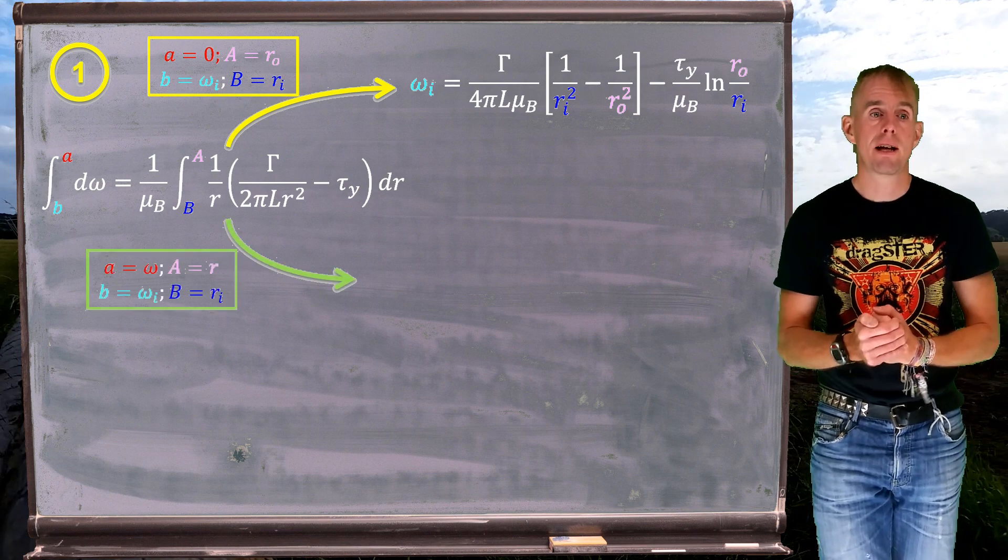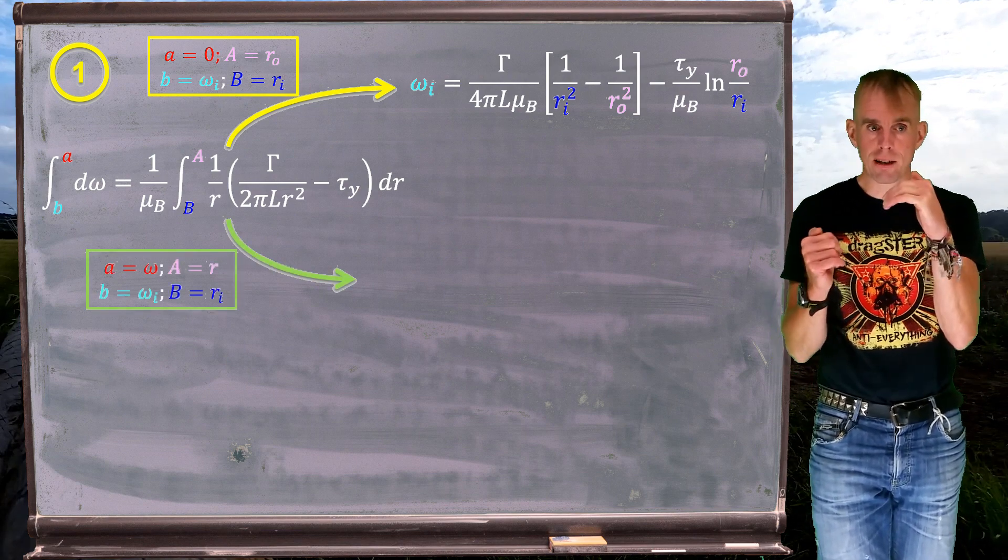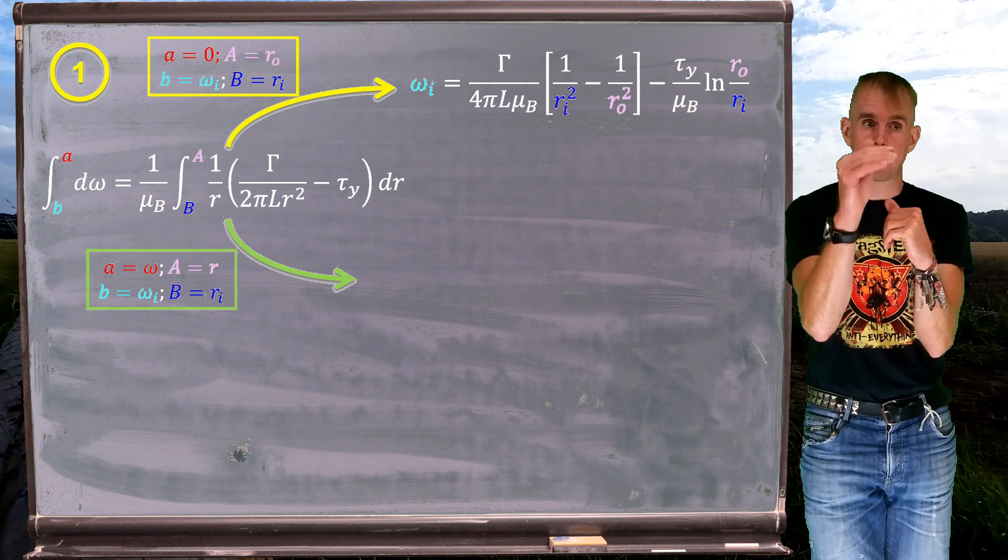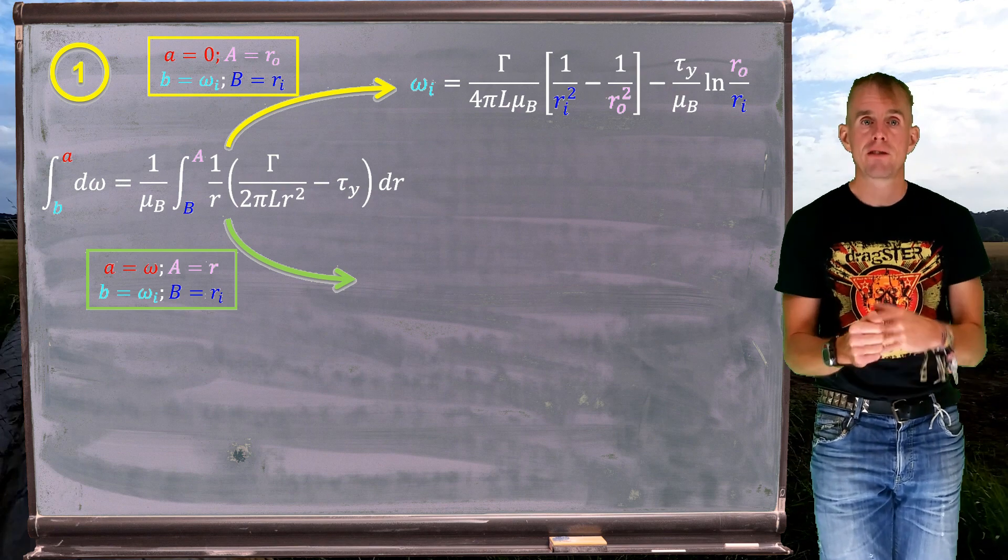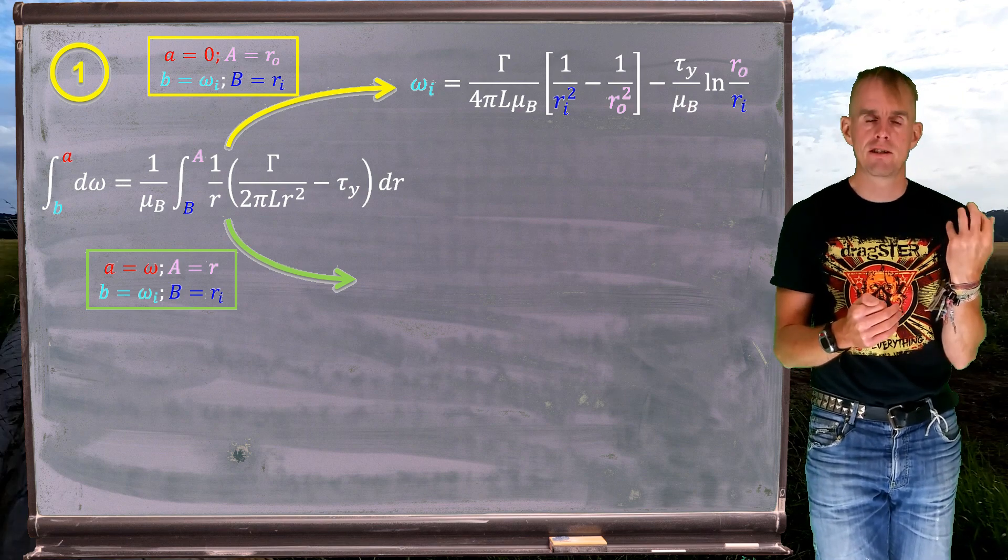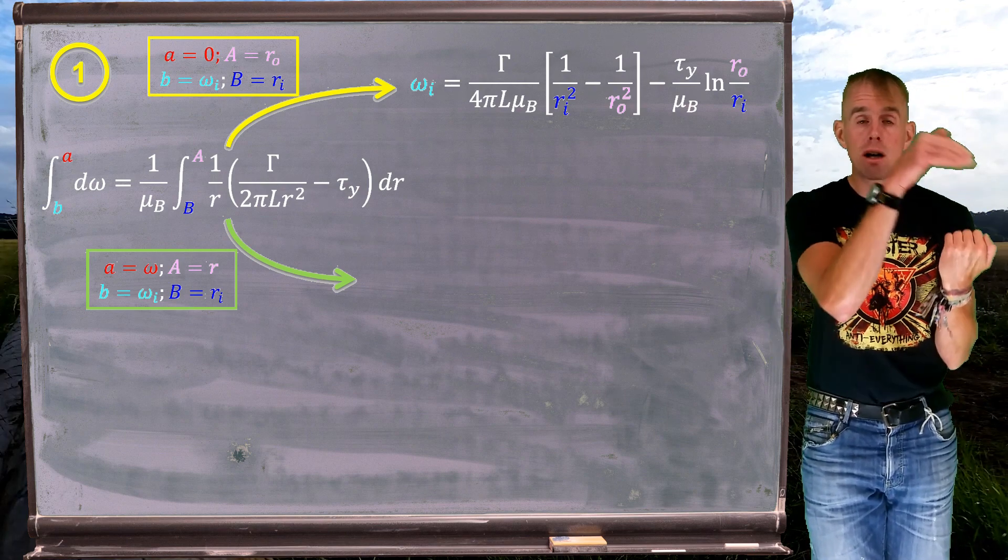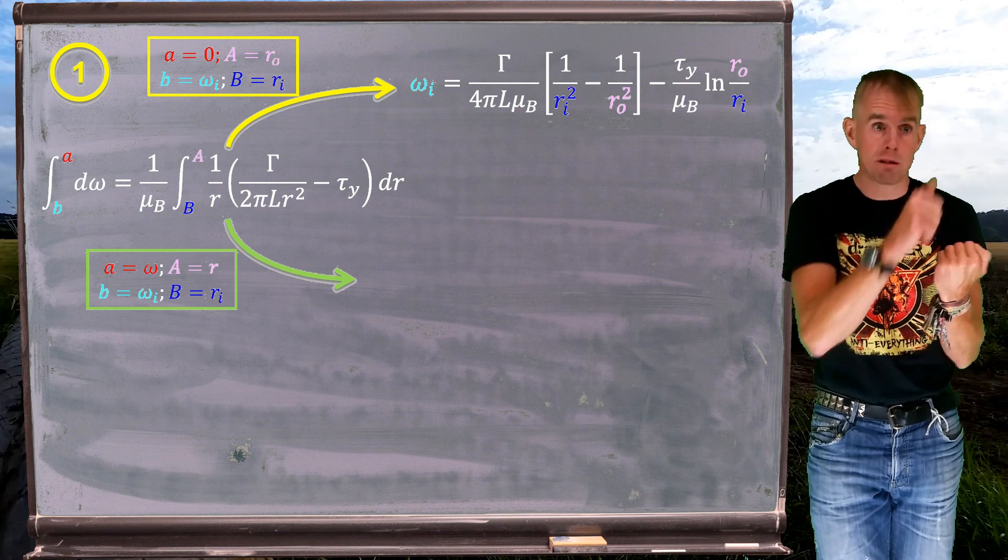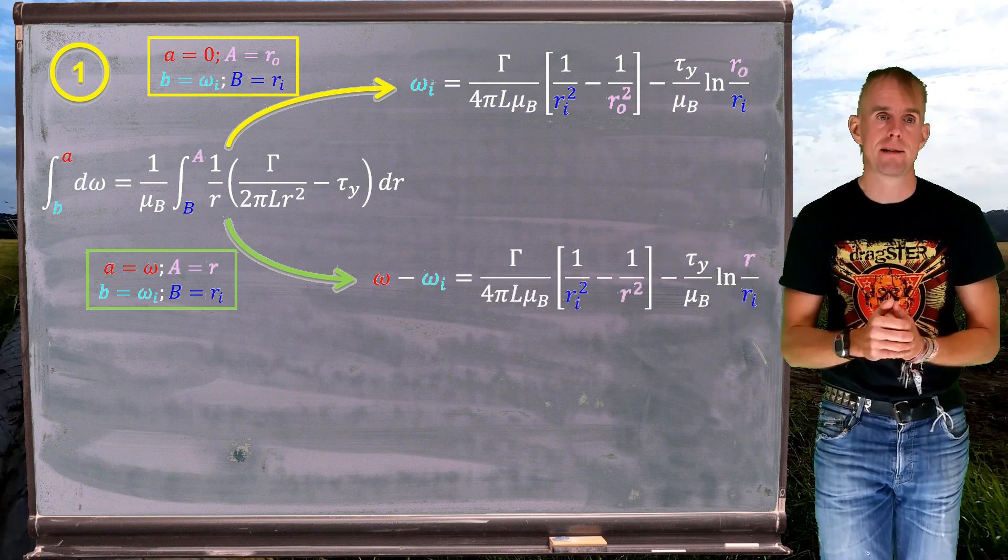Now I'm going to change my limits, and so I'm integrating from the inner cylinder to an arbitrary point in the flow, little r, which means, in angular velocity terms, I'm going from the angular velocity of the inner cylinder, omega i, through to an arbitrary value of omega somewhere in the flow. And I get this result here.